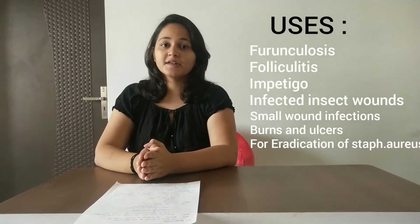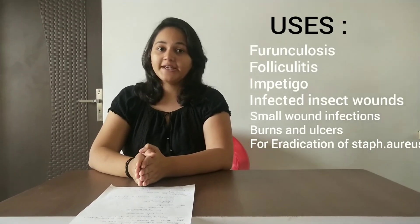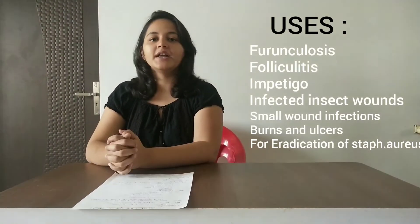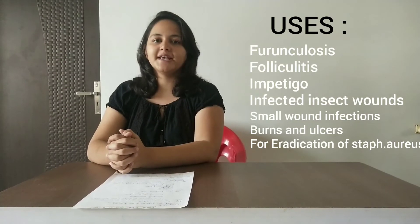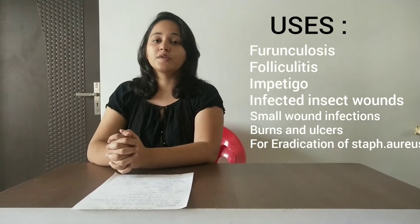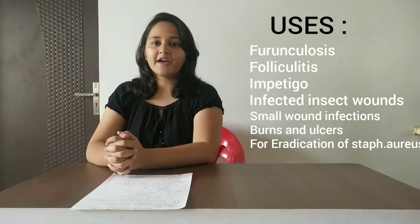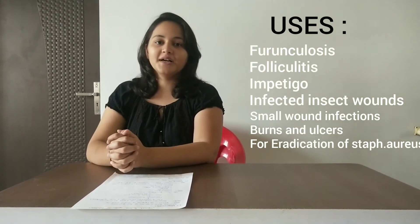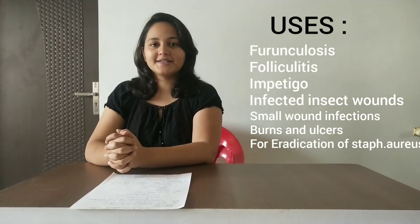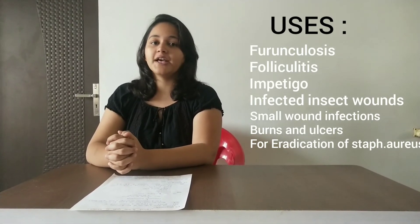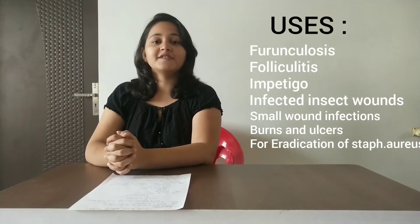Now we will discuss the uses of Mupirocin. It is used for furunculosis, folliculitis, impetigo, infected insect wounds, small wound infections, burns, and ulcers. It is also used for the eradication of Staph aureus.